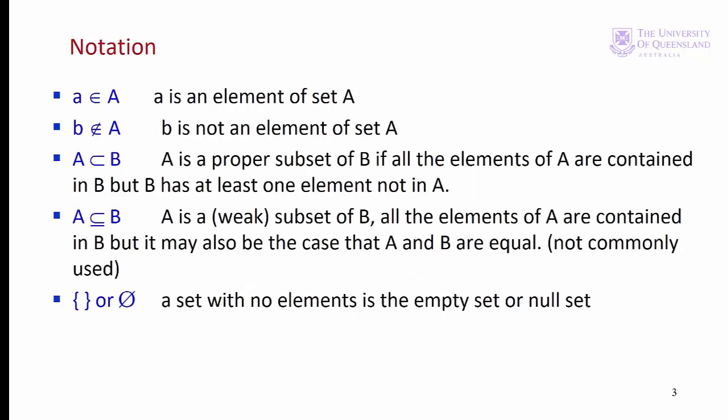Here we have a summary of the notation so far. We also have two new symbols. Here we have a combination of the subset symbol plus the equals sign, which indicates that set A is not only a subset of B, but it could also equal B — so it would be the same as it. This is the symbol in our textbook, but it's not very commonly used otherwise. We'll stick with the standard subset symbol, as that's the one mainly used.